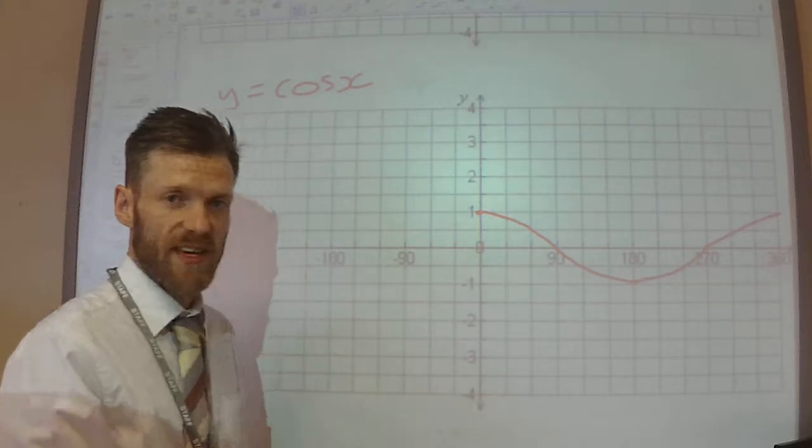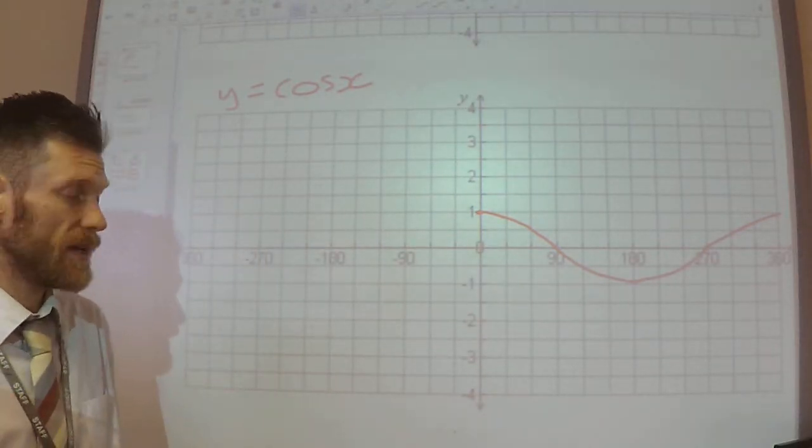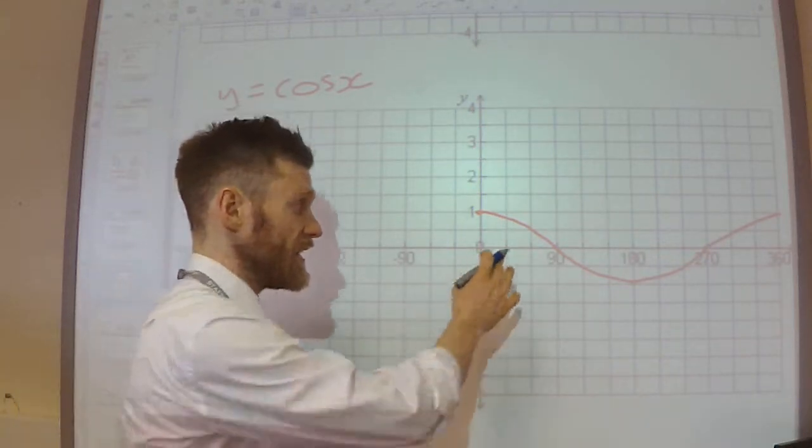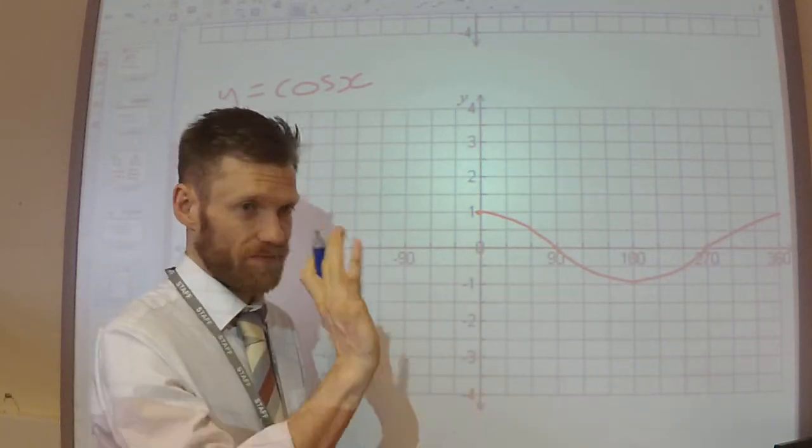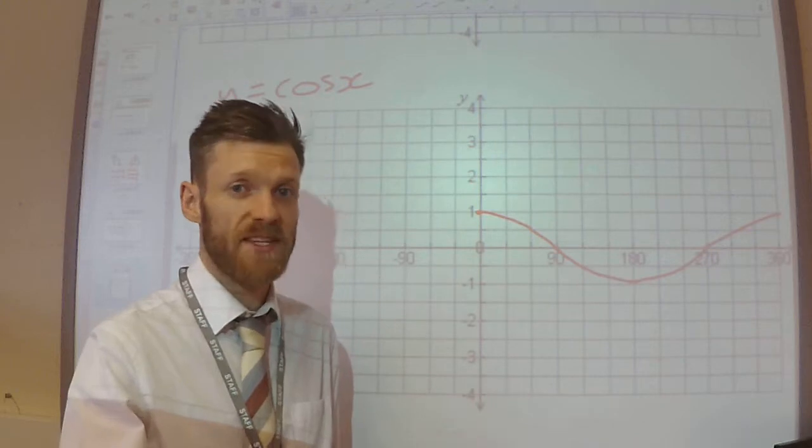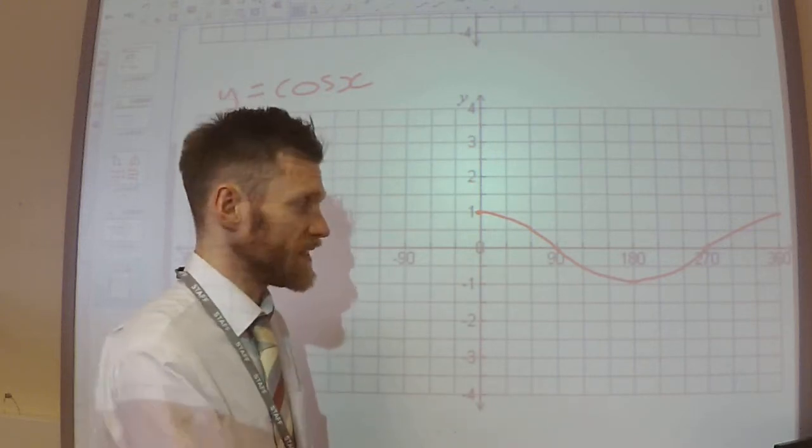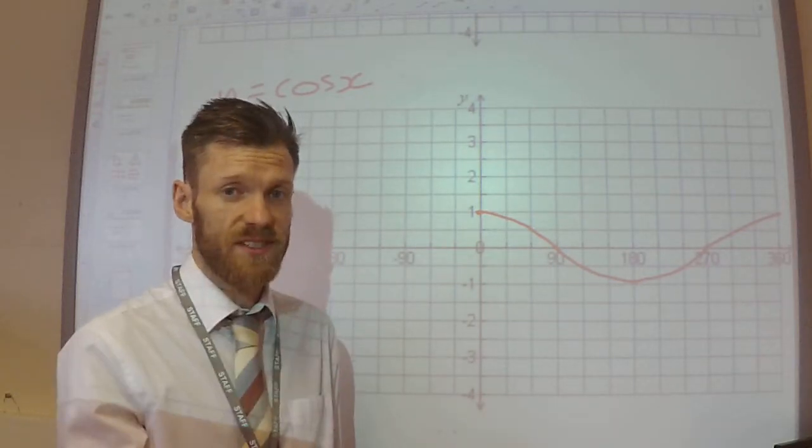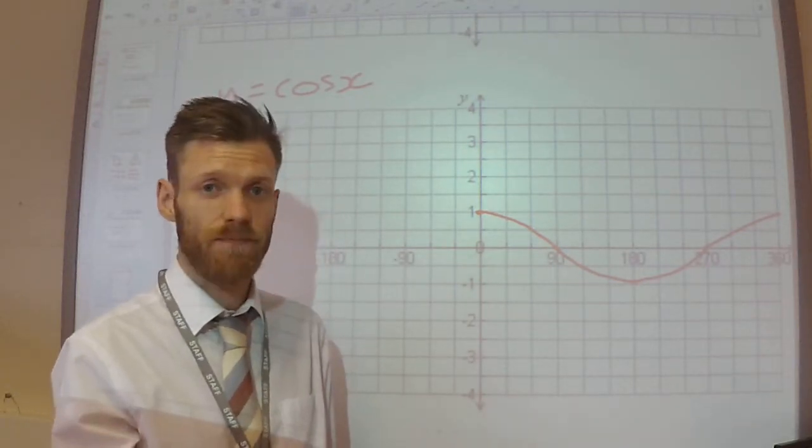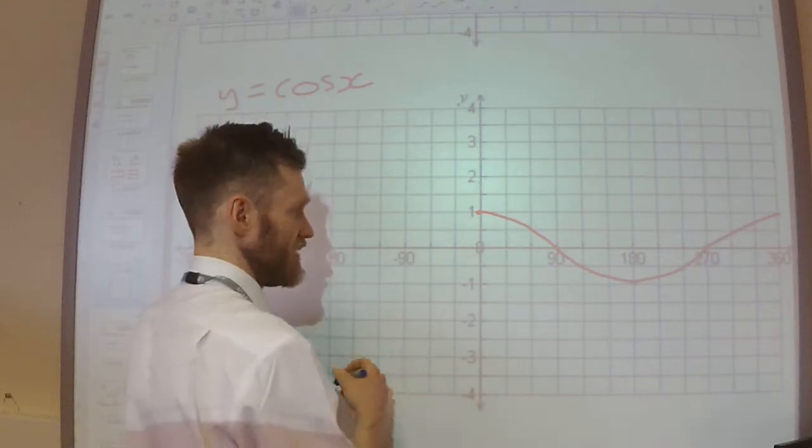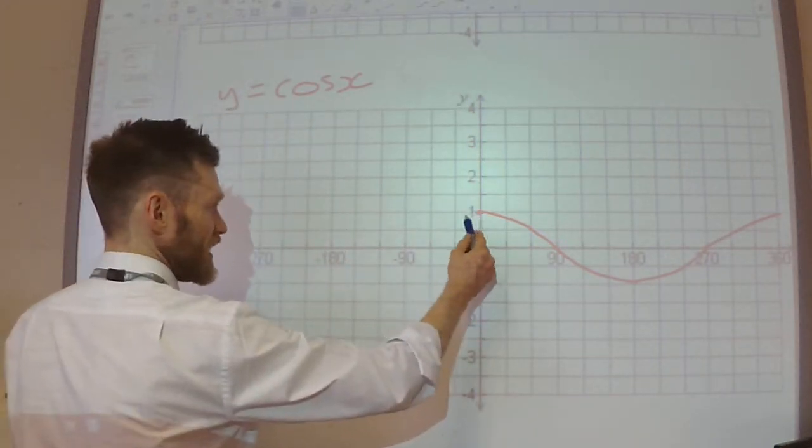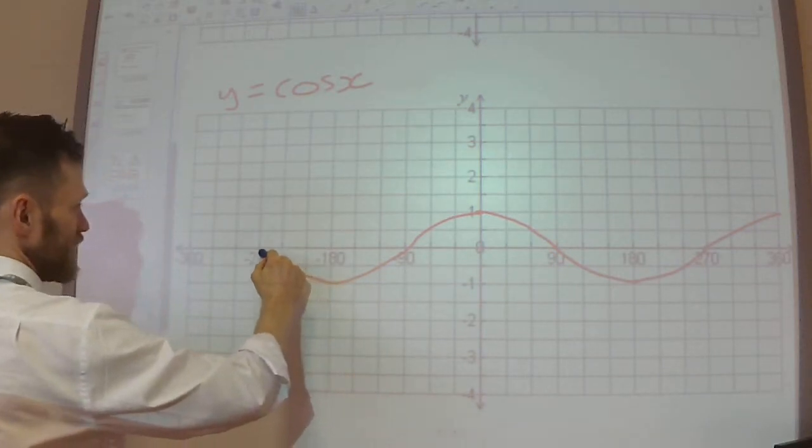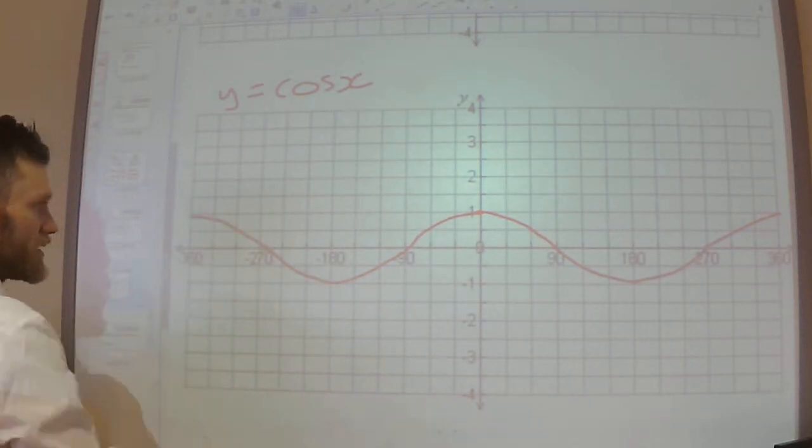And back up to 1 at 360. So it's really, really important that you know the shapes of the graphs and these key coordinates. So if we said cos 90, you need to know it's 0. If we said cos 270, you need to know it's 0. If we said sine 270, you need to know it's minus 1, and so on. You need to know these key values. Over here, it's going to look exactly the same, or rather, it's going to follow the same pattern. Like so.